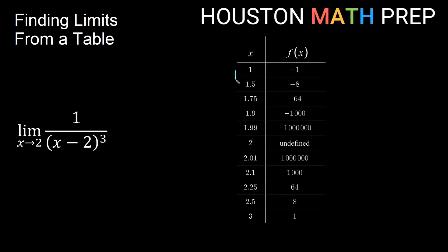Well, from the left side, 1, 1.5, 1.75, up to 1.99, you can see we're getting negative numbers and the negative numbers are getting larger. So we're getting really big negative numbers as we get closer and closer to x equals 2 from the left side. So very large negative numbers.